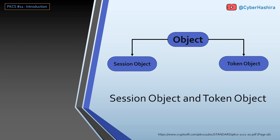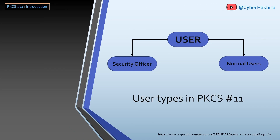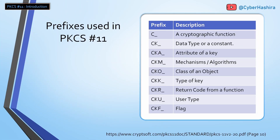There are two users in PKCS#11: a Security Officer and a normal user. Think of the Security Officer as an administrator — they perform administrative tasks such as initializing the token, setting passwords, resetting passwords, performing firmware updates, and changing security policies. Normal users are limited to cryptographic operations — they can generate keys, do signing, encryption, hashing, key derivation, and things like that.